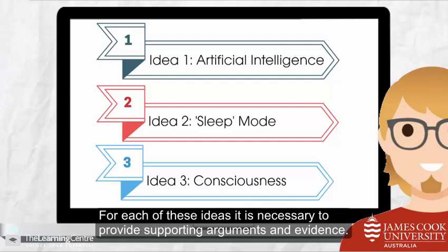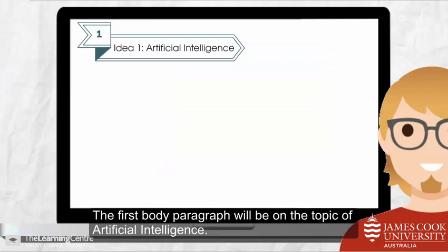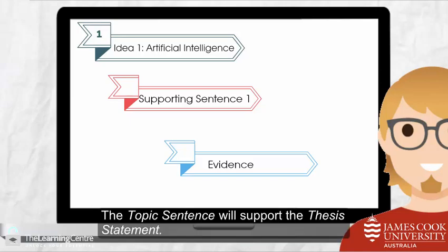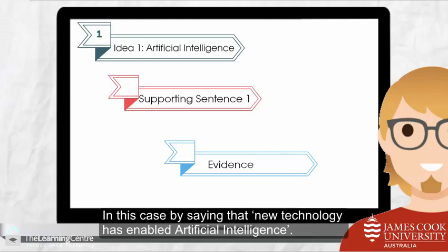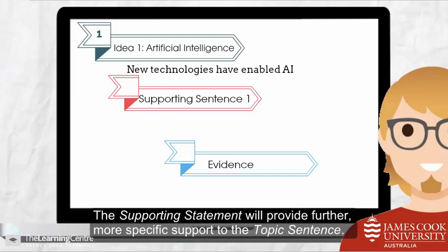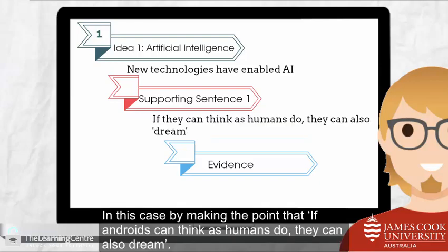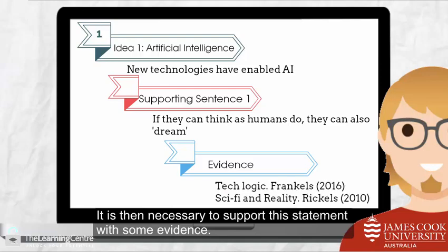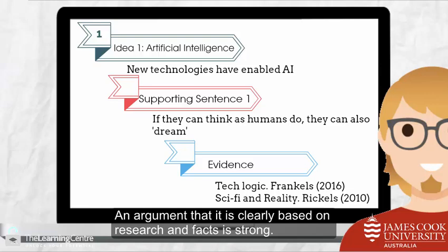For each of these ideas it is necessary to provide supporting arguments and evidence. The first body paragraph will be on the topic of artificial intelligence. It is necessary to create a topic sentence and supporting sentences based on evidence. The topic sentence will support the thesis statement — in this case by saying that new technology has enabled artificial intelligence. The supporting statement will provide further, more specific support to the topic sentence, by making the point that if androids can think as humans do, they can also dream. It is then necessary to support this statement with some evidence. An argument that is clearly based on research and facts is strong.